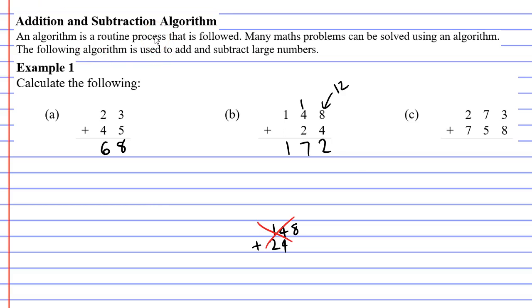Moving on to question C now. Starting at the last column, 3 plus 8 is 11. So remembering to put the last digit down below and carry the other digit to the next column. 7 plus 5 is 12. Add the 1 as well. 13.